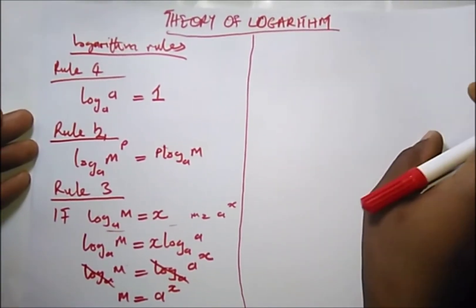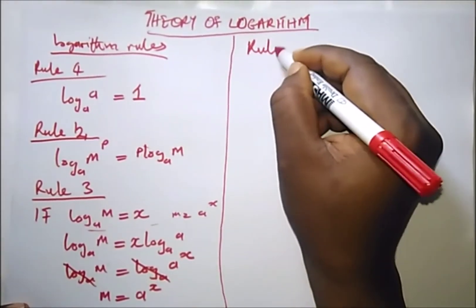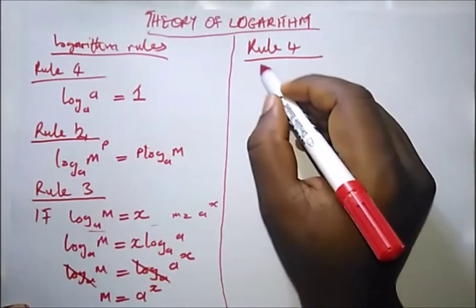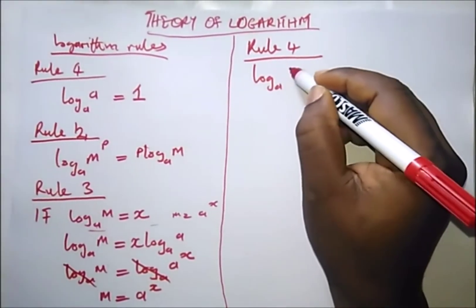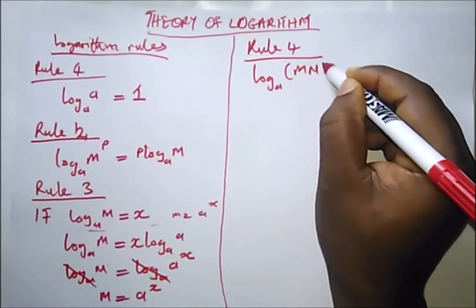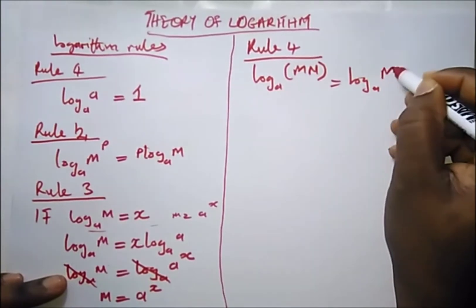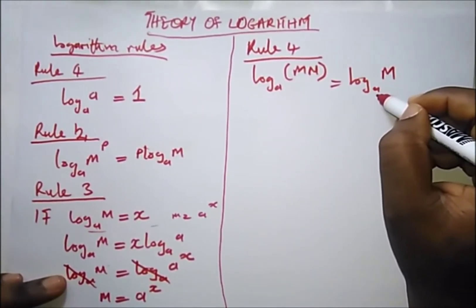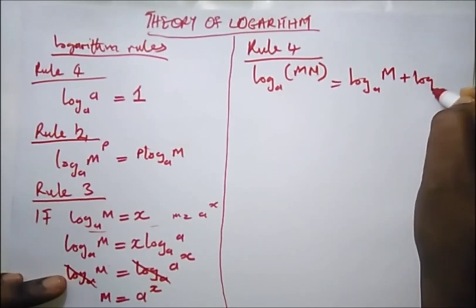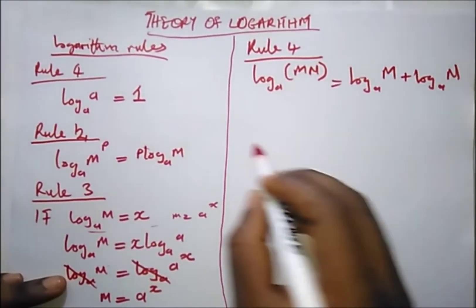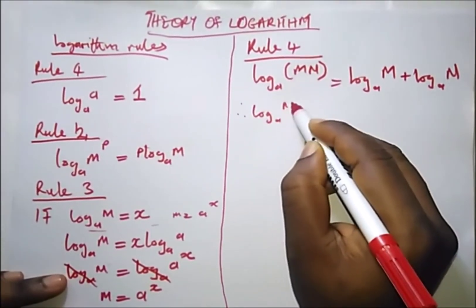Now our fourth rule, which is the rule of product—that's multiplication. When you have log base a of (m times n), it will be equal to log base a of m plus log base a of n. You should note that log base a of m